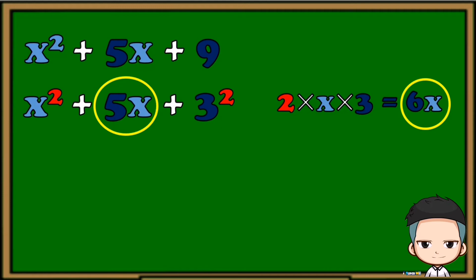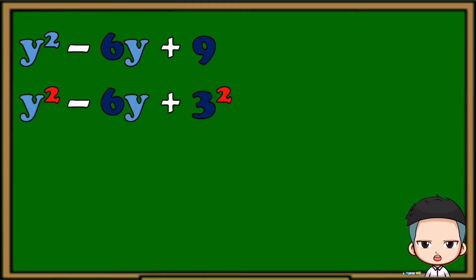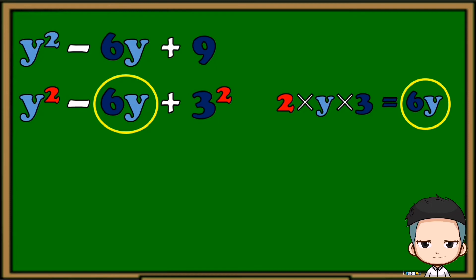Now let's try another one: y squared minus 6y plus 9. Are the first term and last term both perfect squares? Yes — y squared and 9 are both perfect squares. Now to check the second condition, we put them in squared form: y squared and 3 squared. Multiplying the constant value times the base of the first term and the base of the last term, the product 6y is the same as the second term, meaning y squared minus 6y plus 9 is an example of a perfect square trinomial.